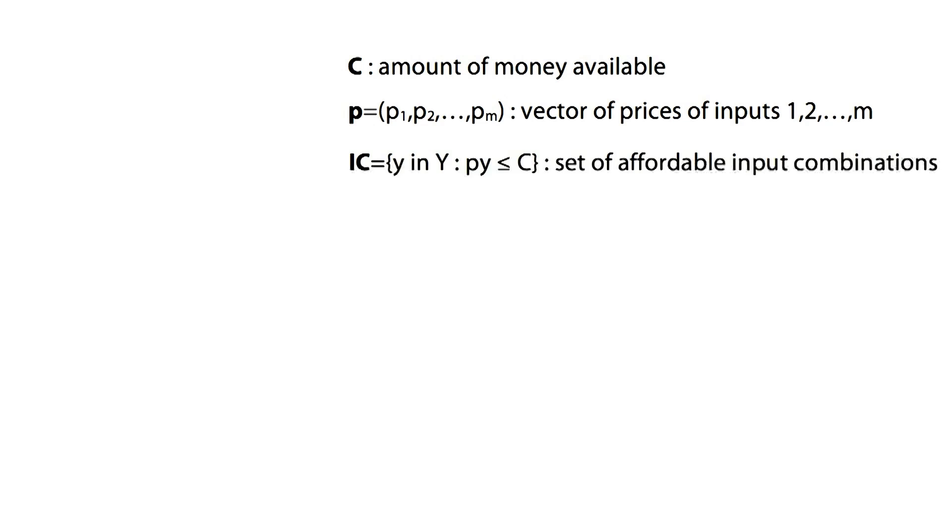Every firm has a budget in order to produce a desired amount of output. The money available for this purpose will be determined as C. P as the vector of prices of all inputs needed for the production process, and IC is defined as the set of affordable input combinations that the producer can choose from.